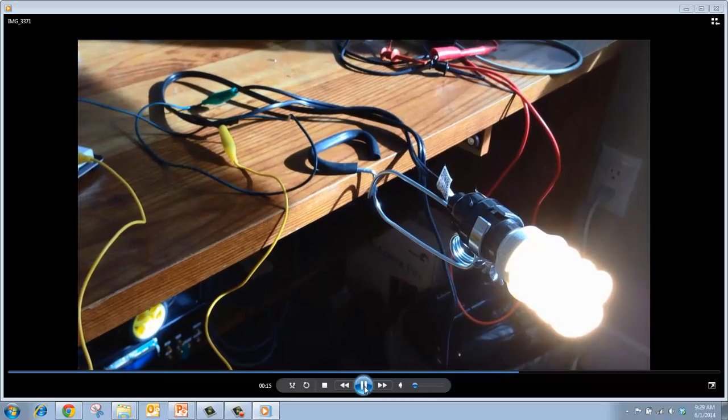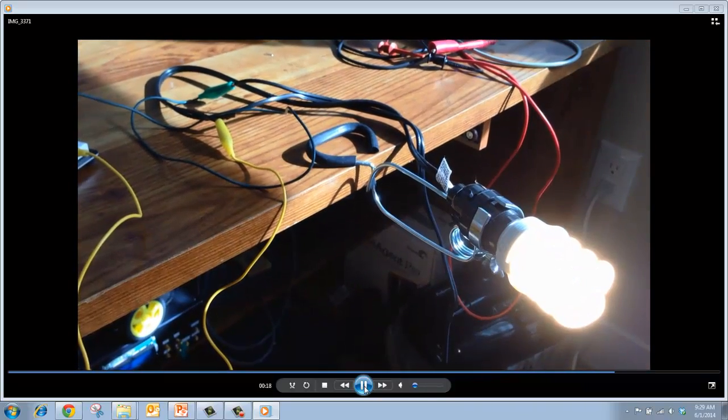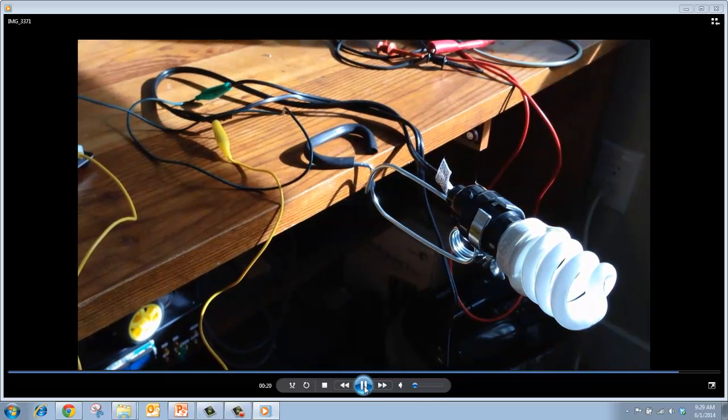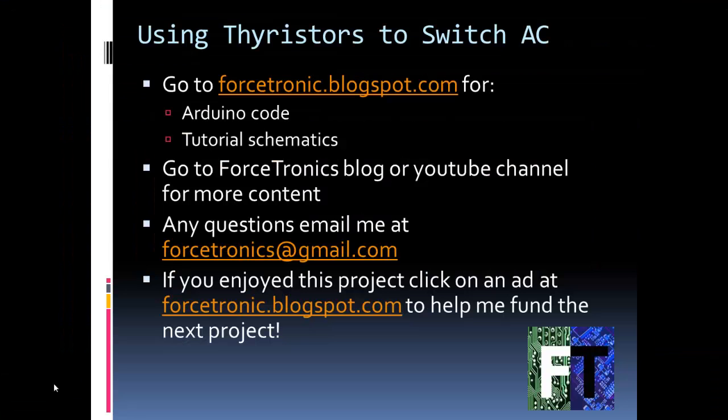You can see the light turn on, turn off, turn on again. I think it's going to turn off one more time. Okay. So that is the tutorial on using thyristors to switch AC. Another great thing is they're low cost, the opto isolator and the triac itself. Low cost and no moving parts. If you want to grab the Arduino code or the schematics for this video, go to my blog if you're looking at this on YouTube. For more content, more tutorials, or even projects for electronics, go to my blog or YouTube channel. Thank you for watching.